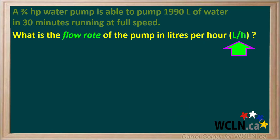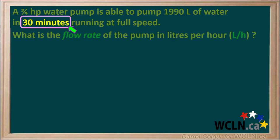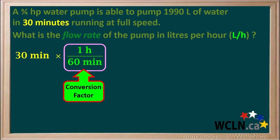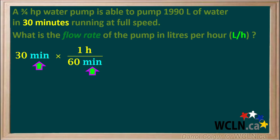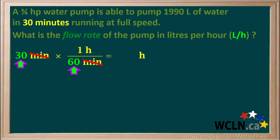First, let's take a close look at the unit they want for flow rate — it is liters per hour. We can calculate this rate by dividing the liters pumped by the hours it takes to pump that amount of water. We are given the amount of water pumped in a time of 30 minutes, but our flow rate needs to be in liters per hour, so we start by converting 30 minutes into hours. We know that 1 hour is 60 minutes, so we multiply 30 minutes by the conversion factor 1 hour per 60 minutes. The unit minutes cancels out, leaving us with hours, and 30 divided by 60 gives us 0.5 hours.